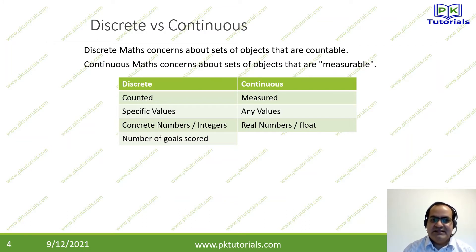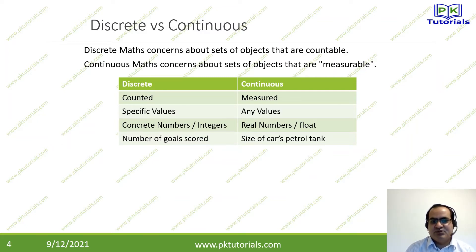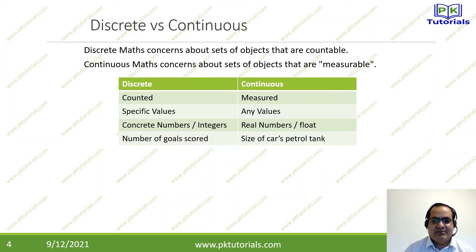In continuous, for example, the size of a car's petrol tank — it can be 25.3, it can be 30.2. It is not compulsory that it would be whole digits. It is possible because the real number set is large and integers are a subset of real numbers. Another example of continuous is temperature — body temperature, outside temperature, room temperature — like 37.5 or 38.3. It is a real number, a floating number.